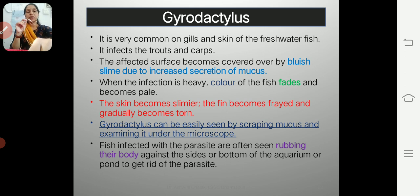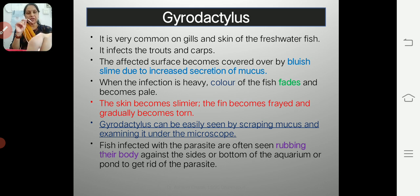The first worm we are going to discuss is Gyrodactylus, and the second is Dactylogyrus. The names are quite similar. The only difference between them is that Gyrodactylus is a live bearer, while Dactylogyrus is an egg-laying parasite.